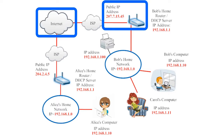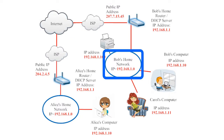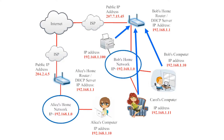From the perspective of somebody outside on the public internet, Bob appears to have only one device connected — his router. But Bob's router can coordinate his public internet connection with multiple devices on his private network. From within the private network, we can see that there are really three more devices connected to the public internet through Bob's router.